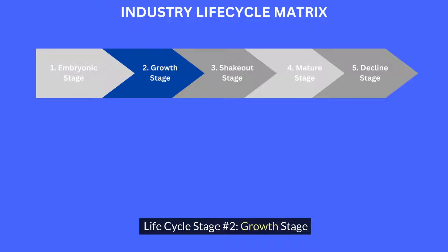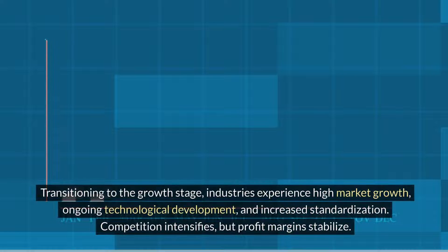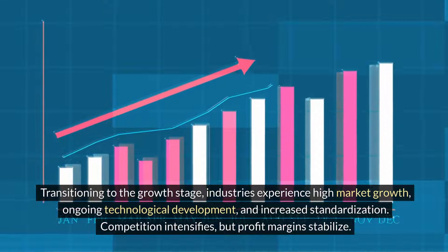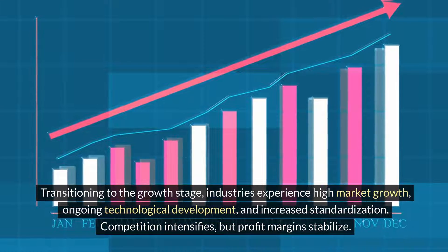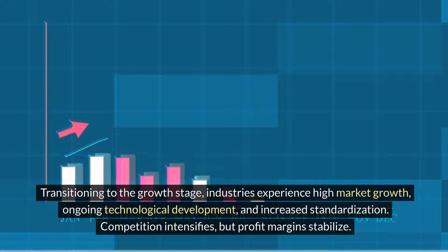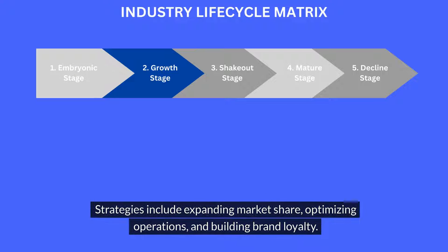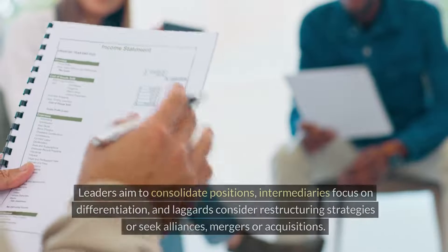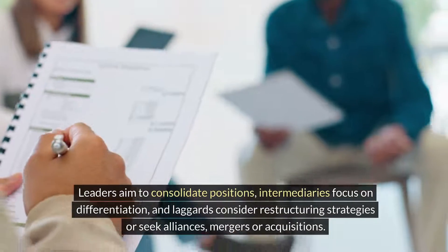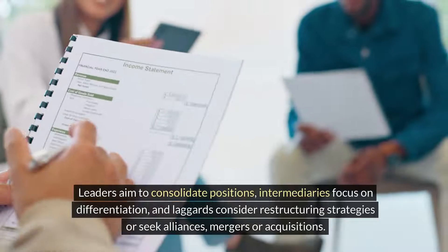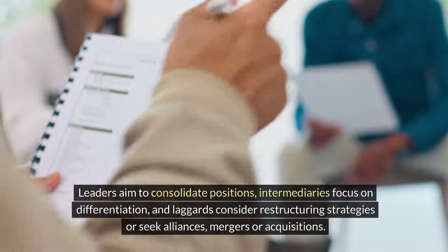Life cycle stage number two — the growth stage. Transitioning to the growth stage, industries experience high market growth, ongoing technological development, and increased standardization. Competition intensifies, but profit margins stabilize. Strategies include expanding market share, optimizing operations, and building brand loyalty. Leaders aim to consolidate positions, intermediaries focus on differentiation, and laggards consider restructuring strategies or seek alliances, mergers, or acquisitions.